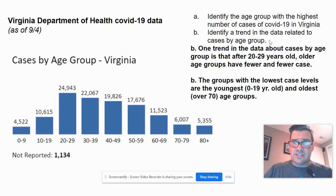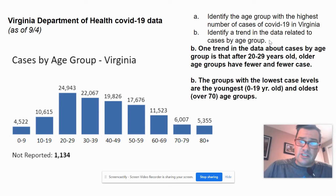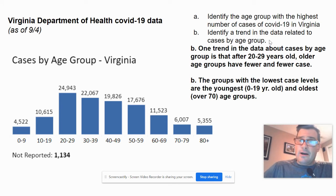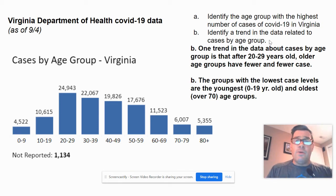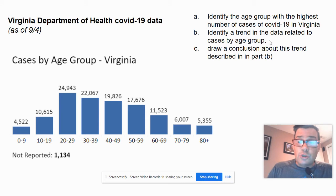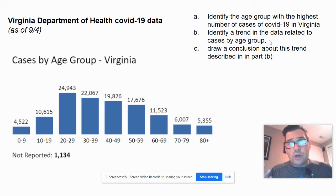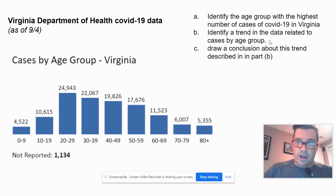Another potential answer: the groups with the lowest case levels are the youngest, zero to 19 year olds, and the oldest, over 70. Those are the fewest levels of cases. Notice that when you're doing a trend, different people could identify different valid trends. This matters because you then have to draw a conclusion from the trend you choose, so be careful which trend you select — it might be easier to draw a conclusion from some trends than others.